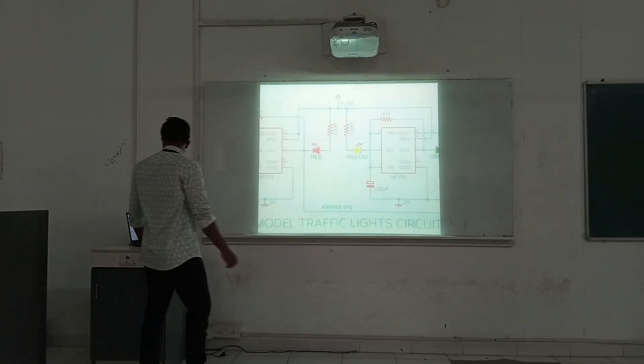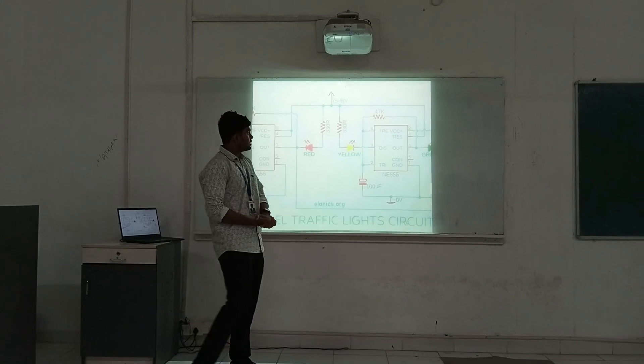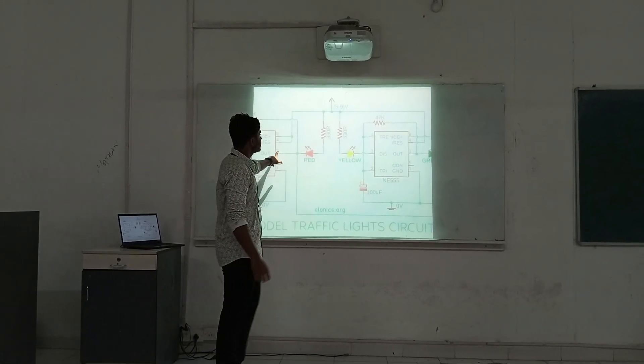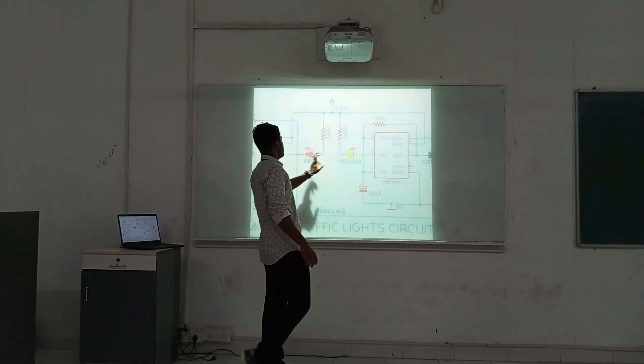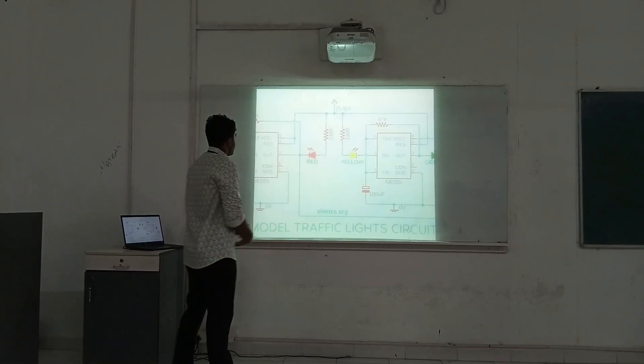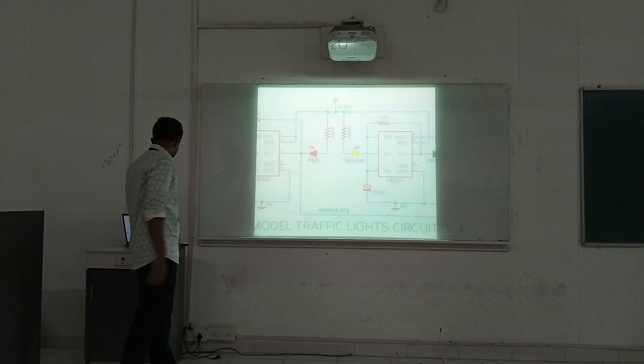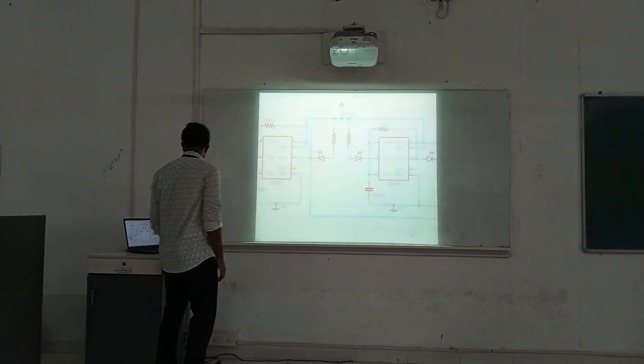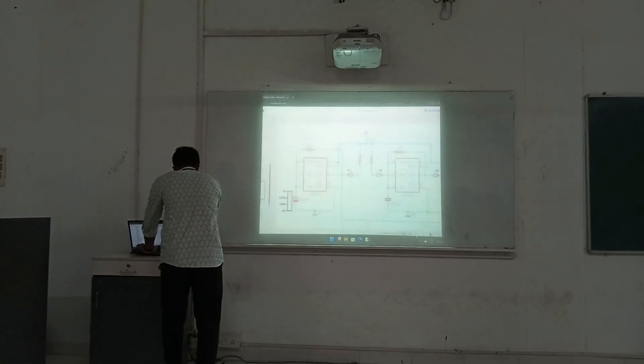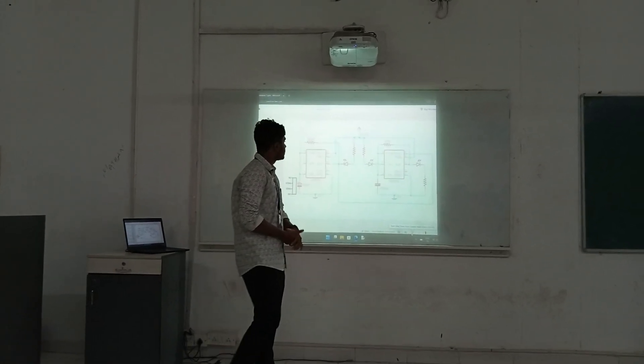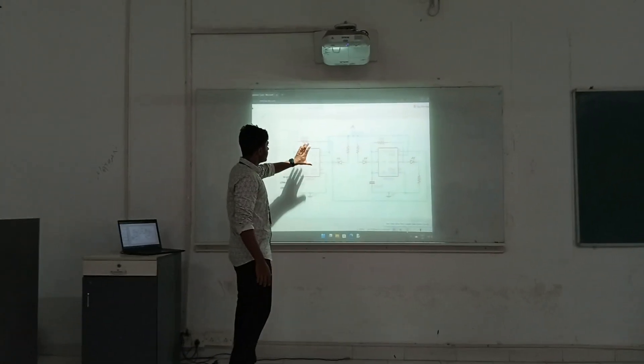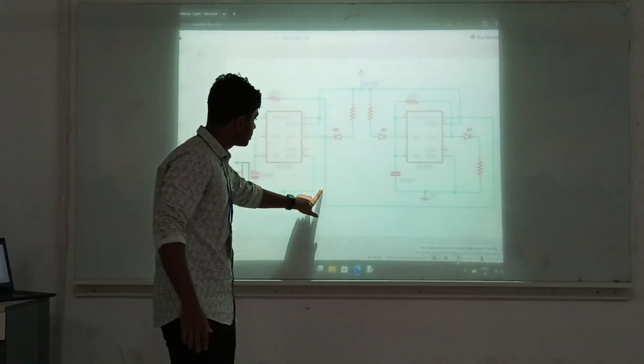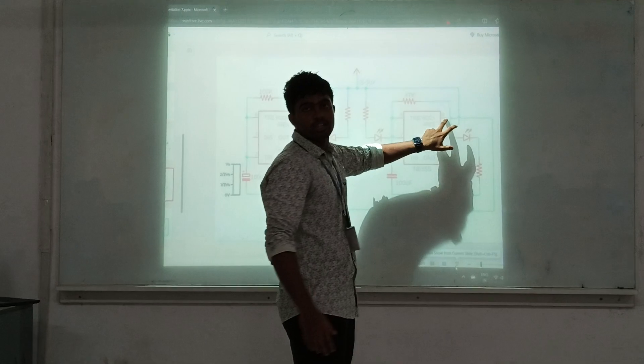Yes, this is my model traffic light circuit diagram. Here I used two 555 Timer ICs and green, yellow, red LEDs, and five components. You can see how it works. Here, first of all, this is the main circuit. From the main circuit, we have been taking an output to the second circuit.